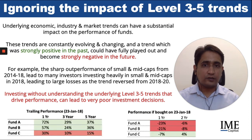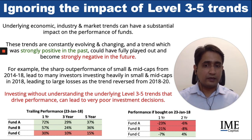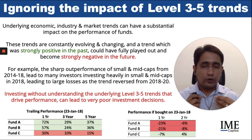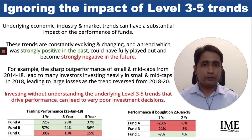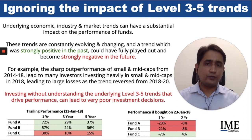This can be seen in actual data. For example, looking at the chart on the left, this is the trailing performance you would have seen for Fund A, B, and C on 23rd January 2018. Fund A and B are small cap funds; Fund C is a blue chip fund. Looking at this trailing performance data, you would have ended up wanting to invest in Fund A and B and not in Fund C. However, the reality is that if you had invested in Fund A or B, it would have led to fairly sharp investment losses over the next couple of years, whereas Fund C was actually the right investment decision to be taking.